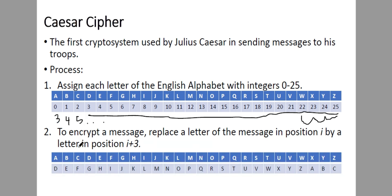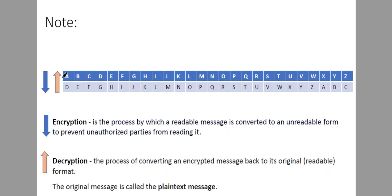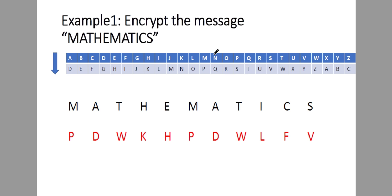In encrypting a message we will use this table. Encryption is the process by which a readable message is converted to unreadable — we go from blue to gray. Decryption is the process of converting an encrypted message back to its original format — from gray to blue. The original message is called the plaintext message. Example: encrypt the message 'mathematics'.